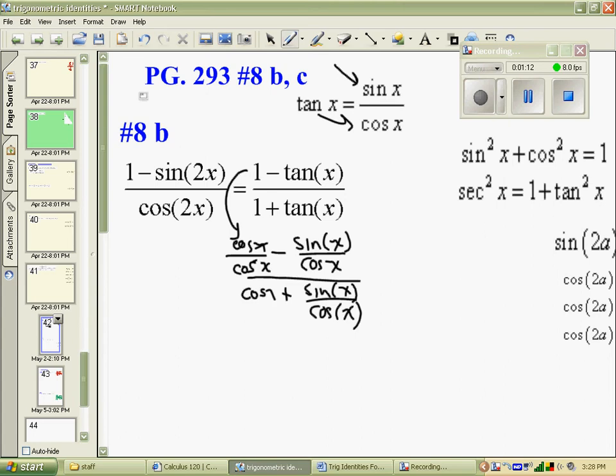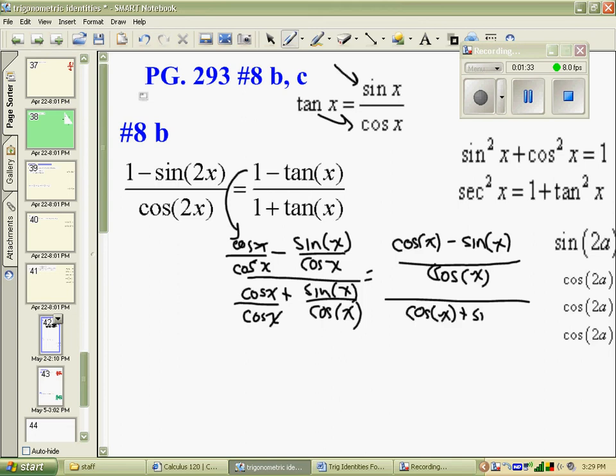That way, I will already have my common denominator, so the numerator is going to be cos of x minus sine of x over cos. The denominator is cos plus sine over cos.